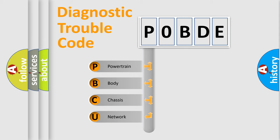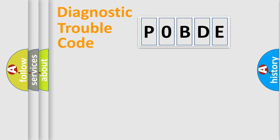We divide the electric system of the automobile into four basic units: Powertrain, Body, Chassis, and Network. This distribution is defined in the first character code.